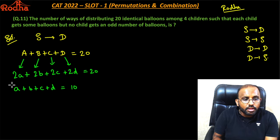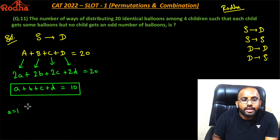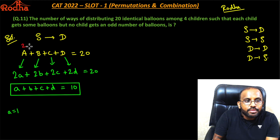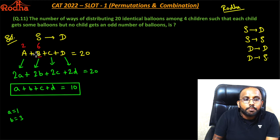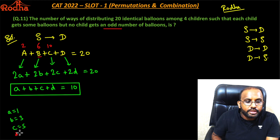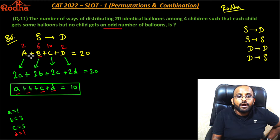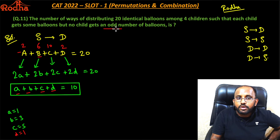Now, whatever value you assign to the small variables a, b, c, d, the actual children A, B, C, D always get an even number of balloons. For example, if a = 1, then A gets 2; if b = 3, B gets 6; if c = 5, C gets 10. So the even-number condition is always satisfied.